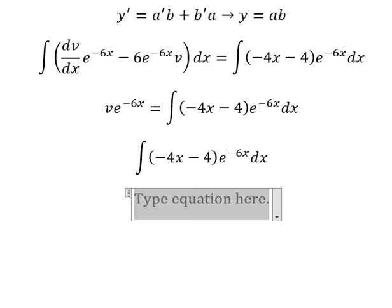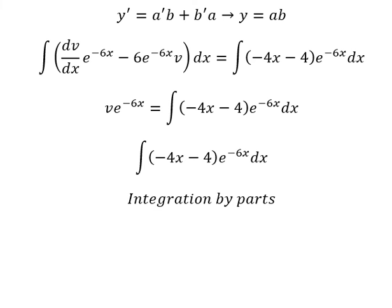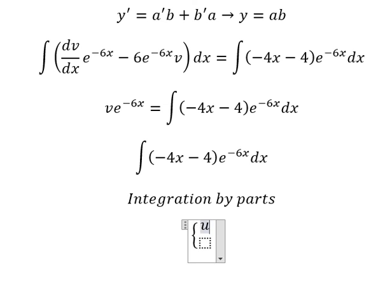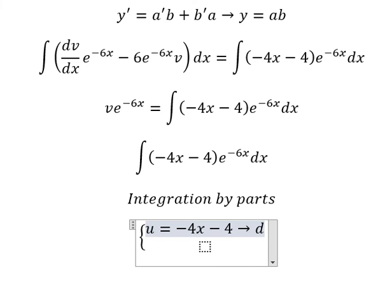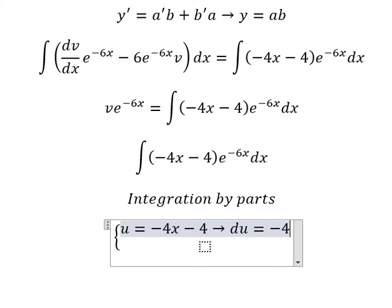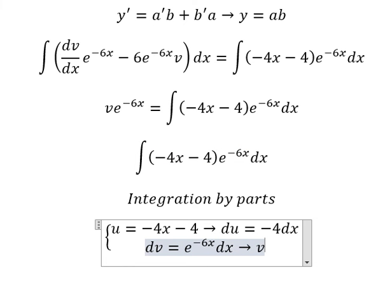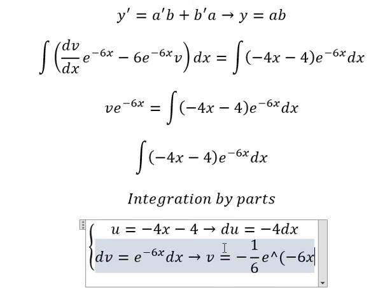We need to use integration by parts. I will set u equal to negative 4s. Differentiating both sides gives du equal to negative 4 ds. The integral of this term gives v equal to negative 1/6 e to the power of negative 6s.